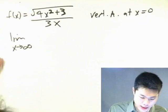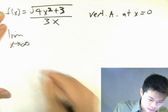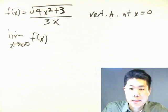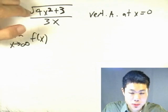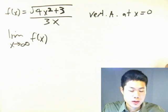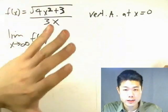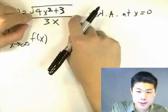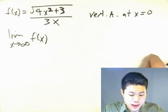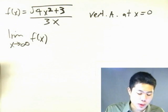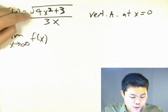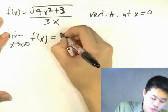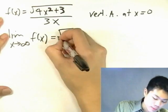Now for the horizontal asymptotes. The degree of the top: even though we have x², we have a square root sign over it, so the effective degree is 1 (since √(x²) = x). The degree of the bottom is also 1. They're the same, so we look at the leading coefficients. But don't forget the square root — the leading coefficient is not 4/3, it's √4 / 3 = 2/3.